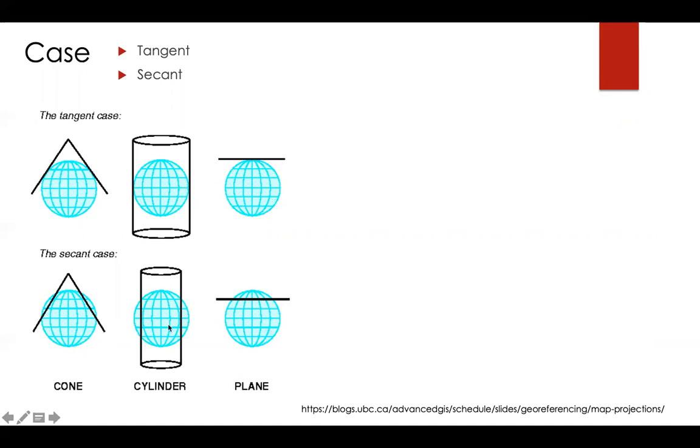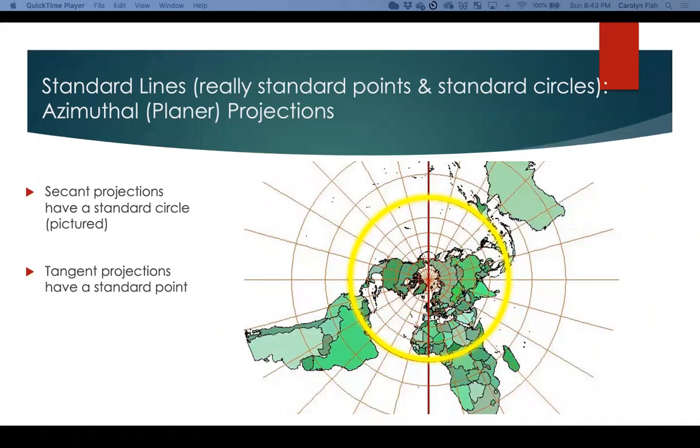Again, here's a cylinder, and a plane just touches the globe at one point, or goes through the globe. On azimuthal or planar projections, there's actually a standard circle on secant projections, and just a standard point on tangent projections.